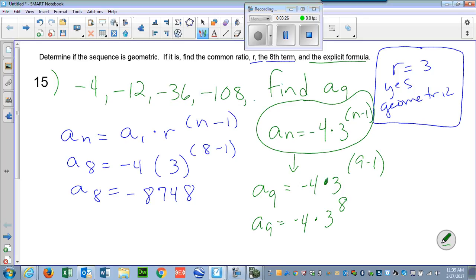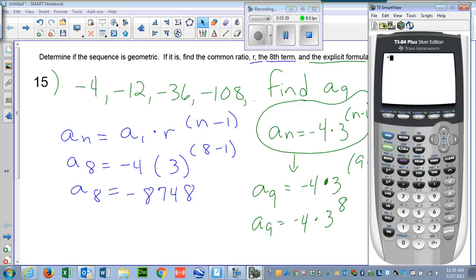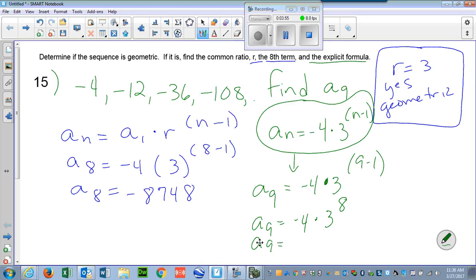Because remember your order of operations. You've got to do your exponents before you do your multiplication. So now I'm going to type this in as negative 4, times 3, to the eighth. So I'll clear my calculator. Negative 4, times 3, to the eighth. Think about why I didn't really need to use parentheses this time. Okay. Negative 26,244. So a sub 9 is negative 26,244. There's my ninth term. And here is my explicit formula. I know that my common ratio is 3, so I know it's geometric. And this right here is my eighth term.